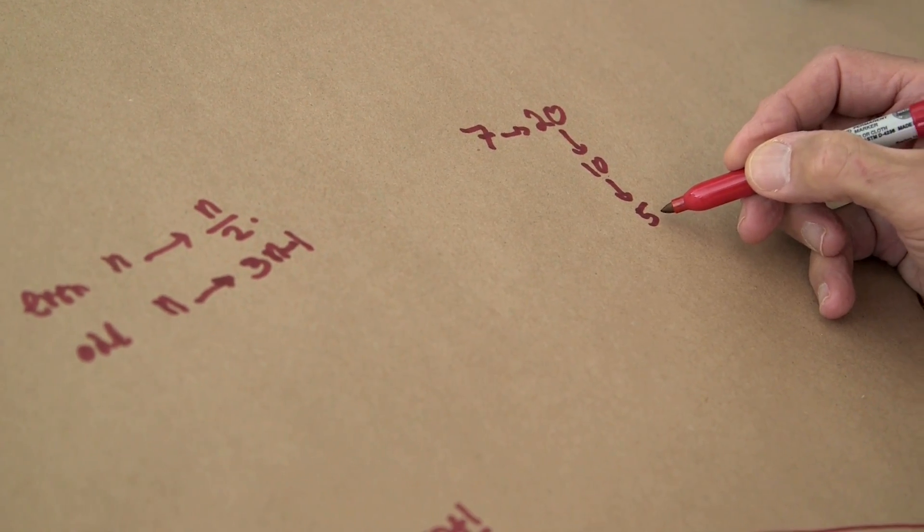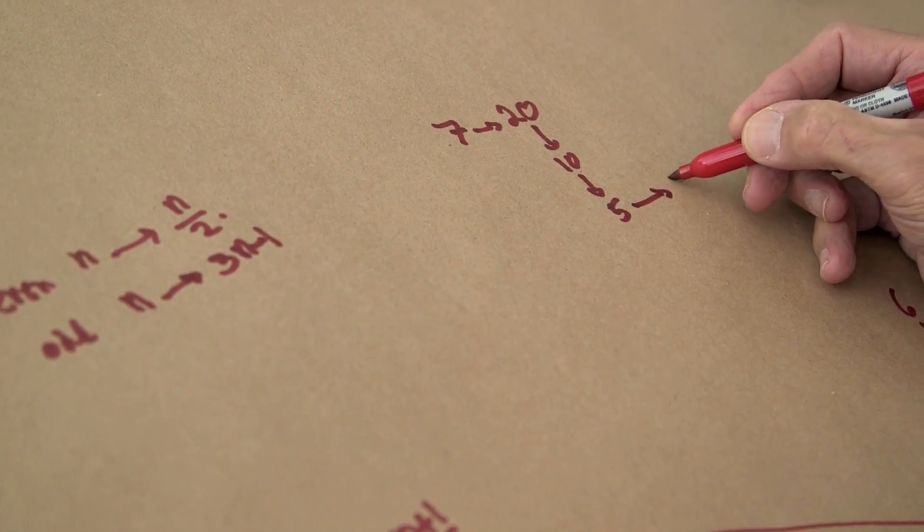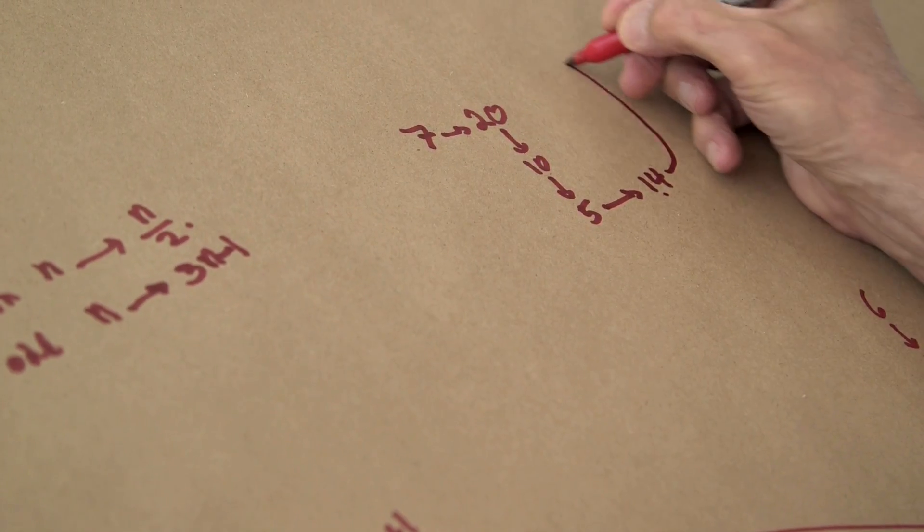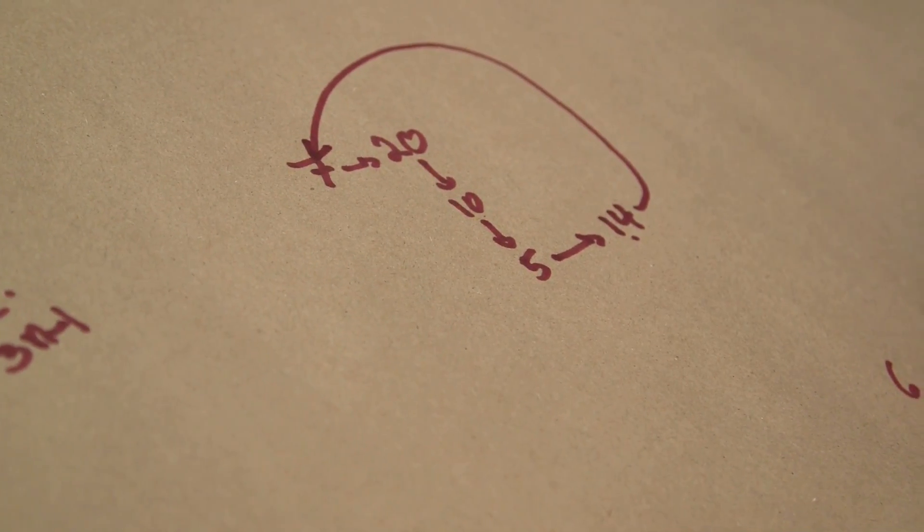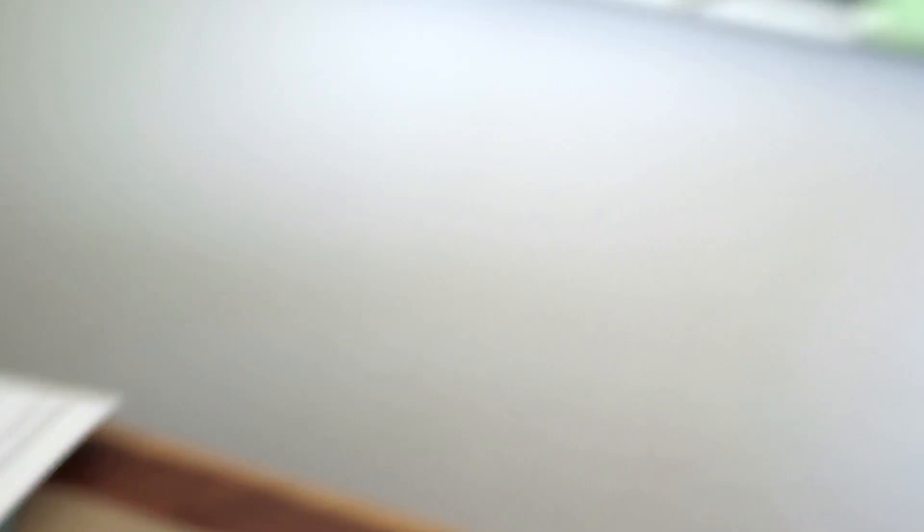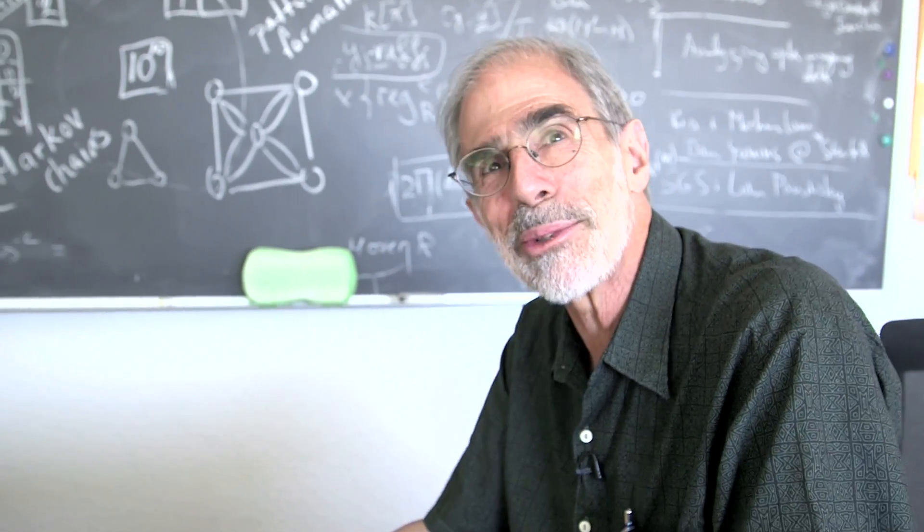3n minus 1, that's 14. Oops, goes down to 7. It will never get to 1. Never. So we solved that problem. We now know the answer. We did 3n minus 1. Maybe they're all easy, except 3n plus 1.